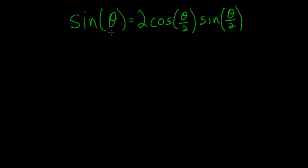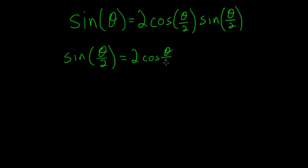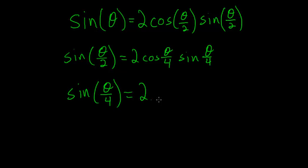If we now replace theta with theta over 2, then we would have that the sine of theta over 2 is equal to twice the cosine of theta over 4 times the sine of theta over 4. And if we replace theta with theta over 4, then we would have the sine of theta over 4 is equal to twice the cosine of theta over 8 times the sine of theta over 8.